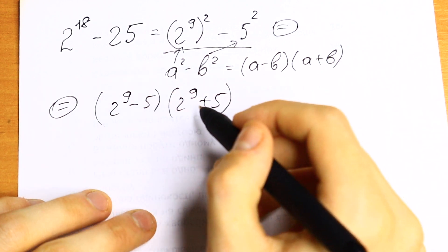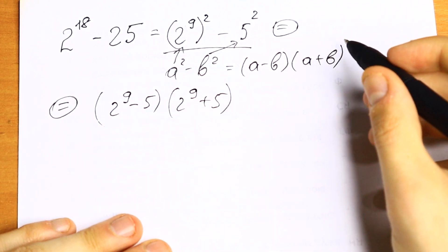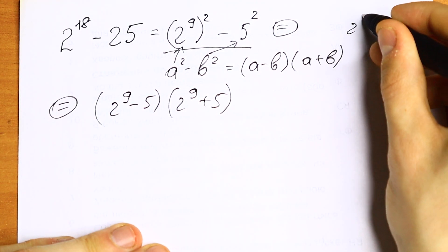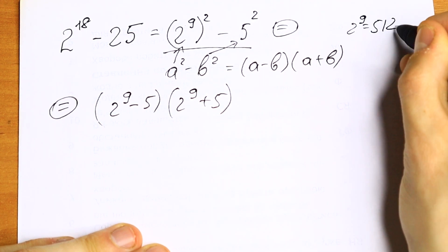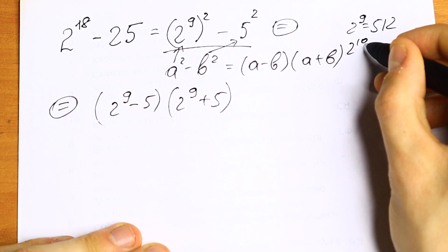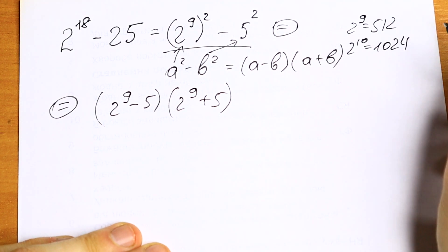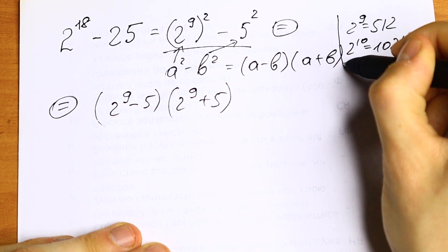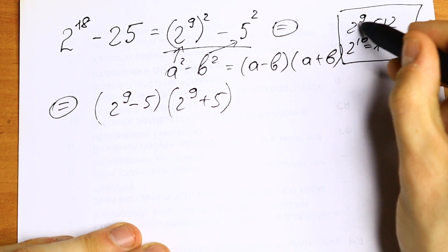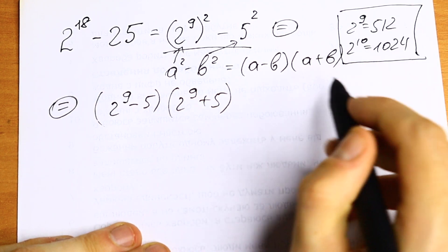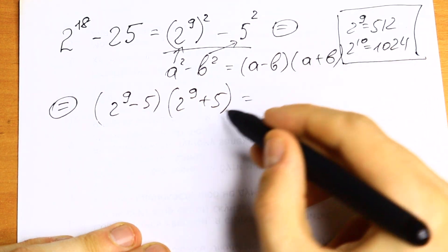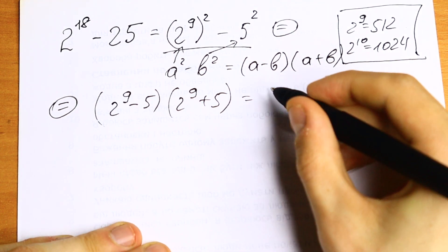So how can we find these parentheses? We need to know that 2 to the 9th power equal to 512. And 2 to the 10th power it's good to know that it will be equal to 1024. But in our case we need to know 2 to the 9th power equal to 512. So let's plug in 512 instead of these 2 to the 9th power.